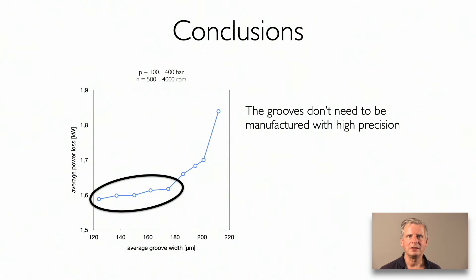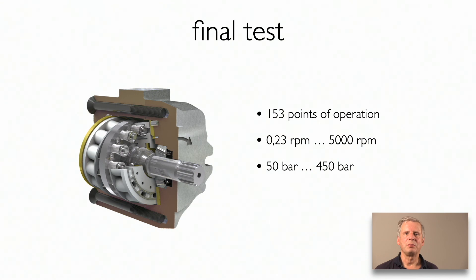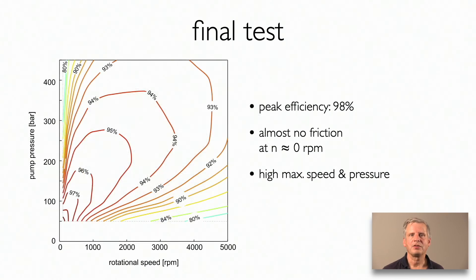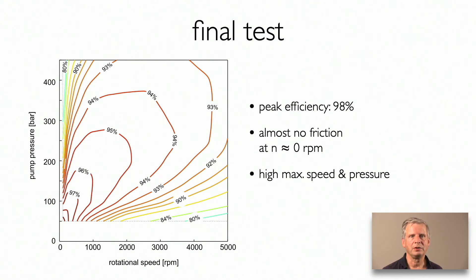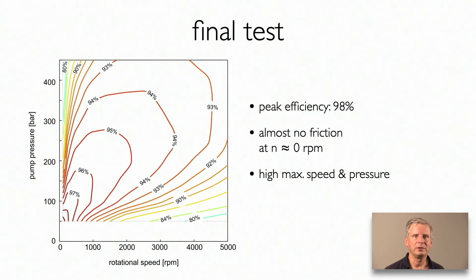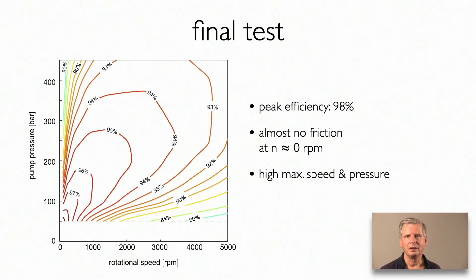This is good news. It means that the overall losses on average are not very dependent on the precise dimensions of the groove, and that the grooves don't need to be manufactured with high precision. At the end of this project, we performed a final measurement of performance in a much wider range of operating conditions. The results are shown in a contour plot. We managed to increase the peak efficiency to 98% and to have an efficiency of more than 92% in most operating conditions. We also managed to have no wear at the port plates and to allow the pump to rotate at high rotational speeds even at high pressures. In the end, our goal is to prove that a pump can be as good as an electric generator or even a gear transmission.